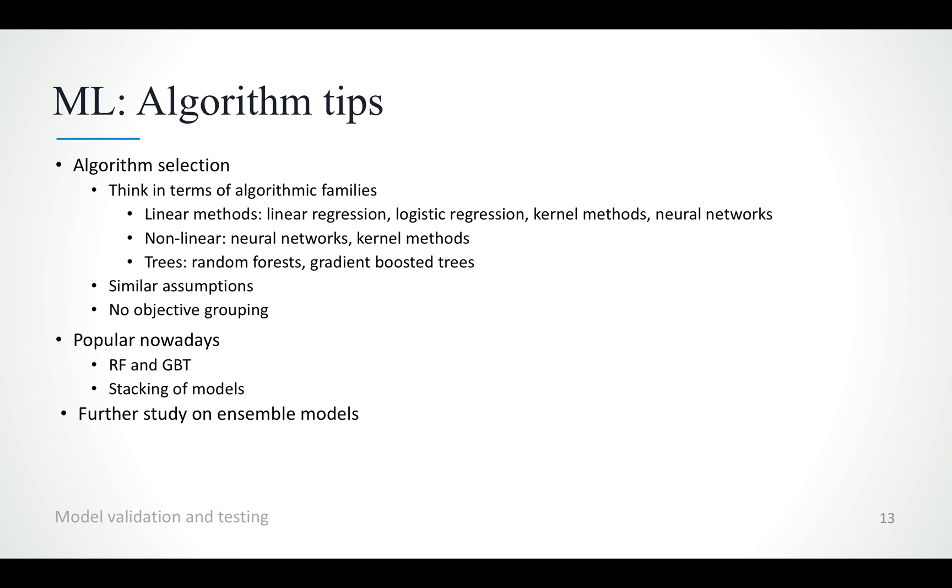An issue is that there is no objective grouping of machine learning algorithms in different families. Also, some algorithms could easily be part of different families. For example, kernel methods and neural networks are linear methods, but you could also characterize them as non-linear algorithms because they can be used to regress or classify on non-linear patterns.